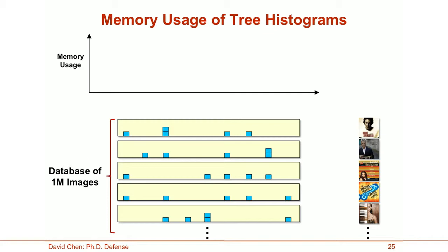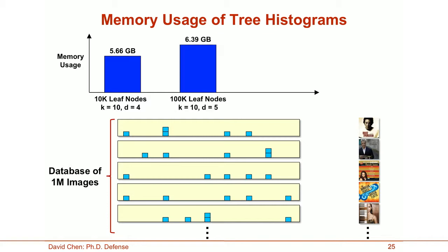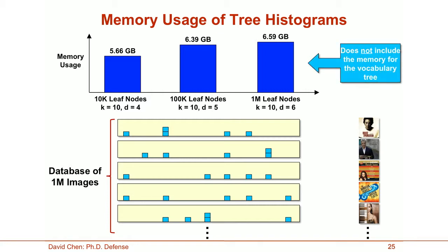In order to perform this voting, we need to store all the database tree histograms in memory for a database of 1 million images. For a tree with 10,000 leaf nodes, the tree histograms consume around 5.66 gigabytes. With 100,000 leaf nodes, memory increases to 6.39 gigabytes, and with 1 million leaf nodes, it would be 6.59 gigabytes. So a large amount of memory is needed, and this does not include the memory needed for the vocabulary tree itself.